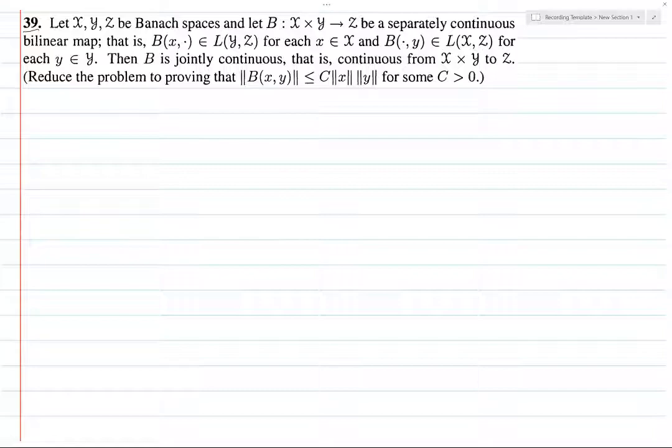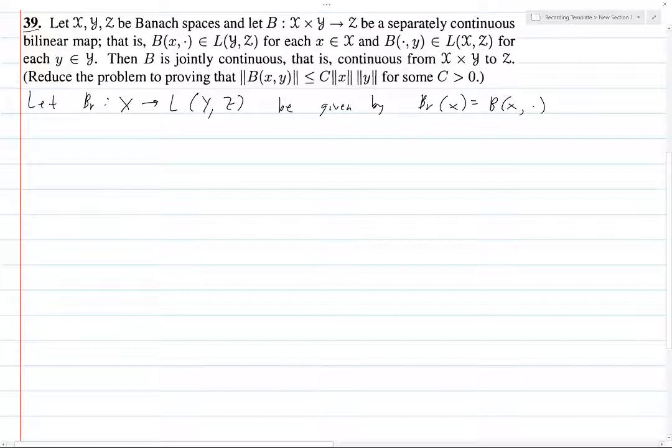Alright, Exercise 39. We want to prove that B is jointly continuous. I'm going to let B_r from X to L(Y,Z) be given by B_r(x) equals the function B(x, ·), and then this dot is the dummy variable, so x is fixed here. For every x, this gives us a function in